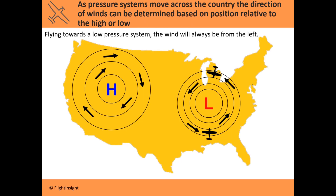Now that we know the direction of travel of wind in high- and low-pressure systems, we can make an interesting observation. As you fly towards the center of a low-pressure system, you're going to perceive the winds coming off of your left side — whether you approach from the north, south, east, or west. Because the winds flow counterclockwise, flying inbound means the wind is perceived off your left. By that same token, flying inbound towards a high-pressure system means the winds are off your right side, regardless of approach direction. So you can determine the wind type based on what you're flying into, and if you know you're flying towards the center of a system, you can identify it by wind direction.